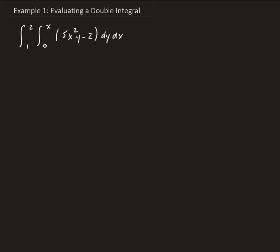The first part is to integrate with respect to y. We have the integral from 0 to x of 5x squared y minus 2. We want to integrate this with respect to y. All the rules of integration apply the same here — the only difference is that we're integrating with respect to y.